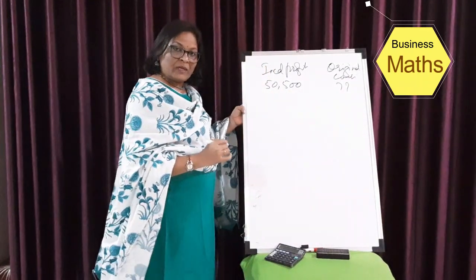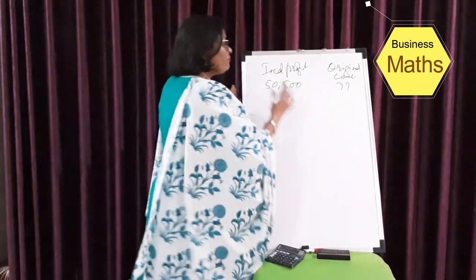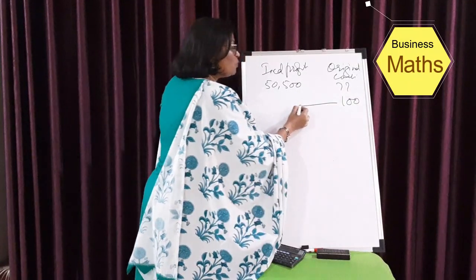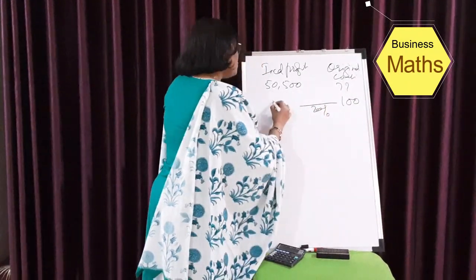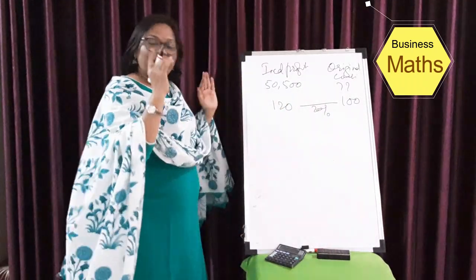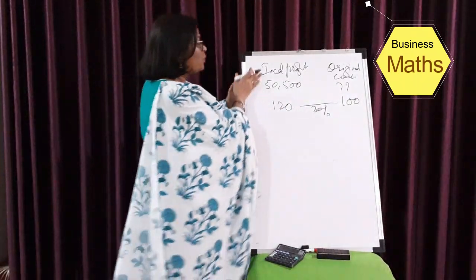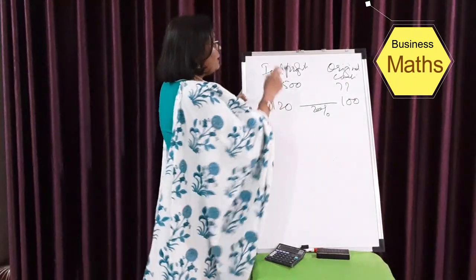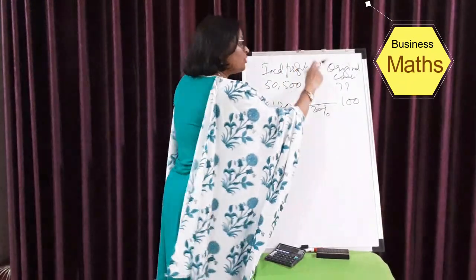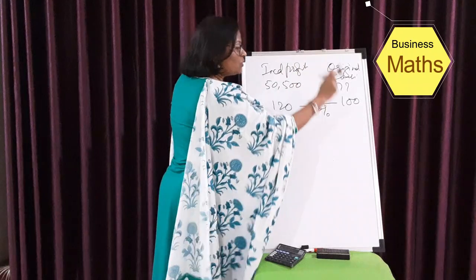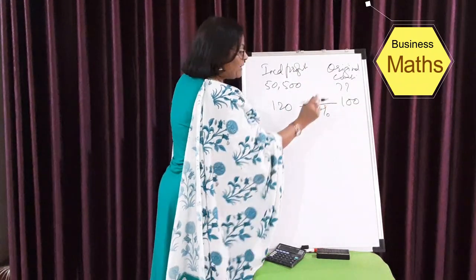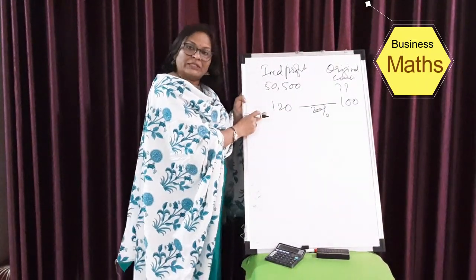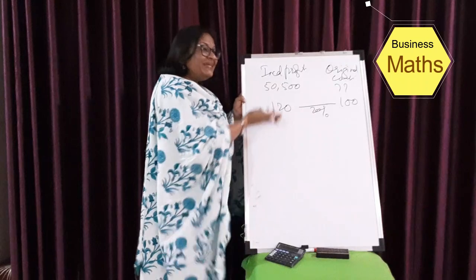Again we use the same approach. If your original cost was 100 and you sold it at 20% profit, you would have sold the product at 120. It is very important to place the respective values beneath each other correctly — the including-profit value of 50,500 corresponds to 120, and the original cost corresponds to 100.